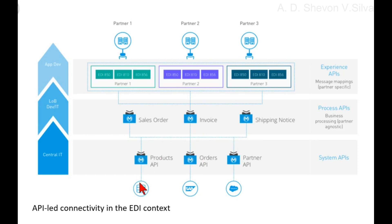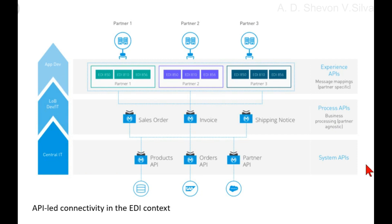At the System API layer, the product API interacts with the product database, the order API interacts with SAP, and the partner API interacts with Salesforce. Central IT operates in parallel with the System APIs and is connected to Line-of-Business IT, which is connected to App Dev. LOB IT operates in parallel with the Process APIs, and App Dev operates in parallel with the Experience APIs.